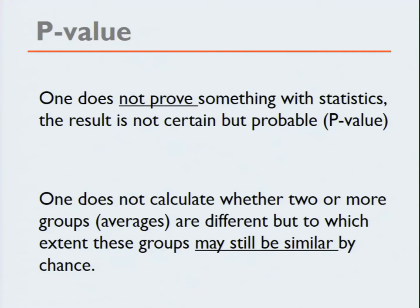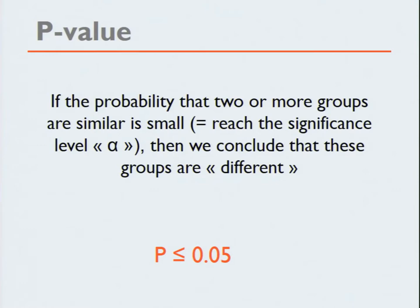One does not calculate whether two or more groups are different, but to which extent this group may still be similar by chance. So we do not prove differences; you calculate the probability that two groups are similar by chance. And once the level of that probability is below five percent, we say they are different — but in fact we didn't prove that they were different. We simply say that the probability that they are different is very small.